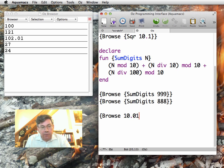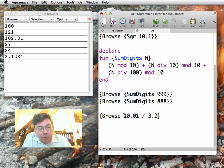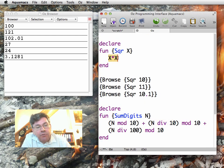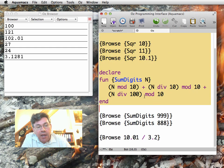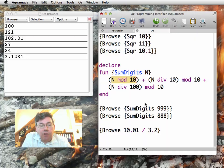For example, 10.01 divided by 3.2, which is 3.1281. Notice I have here floating point division, I have here integer division, the multiplication here works for both integers and floats, and then there's an operation which exists only for the integers, which is modulo.